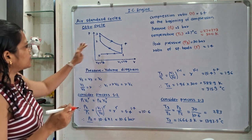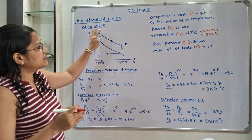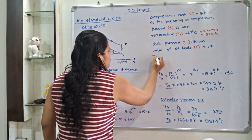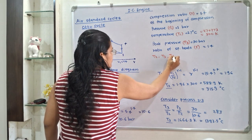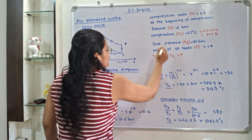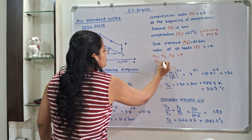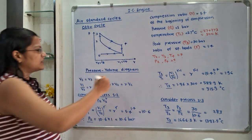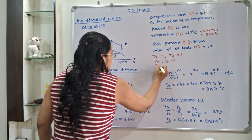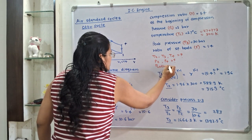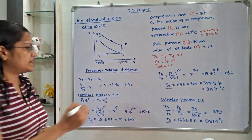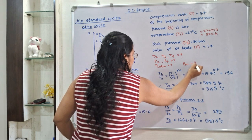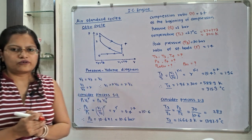We have to find the pressure and temperature at the remaining points — that means T2, T3, T4, and P2, P4. We also need to find the air standard efficiency (η_Otto) and the mean effective pressure (Pm).